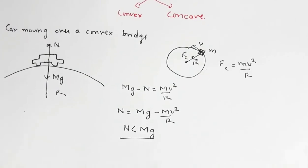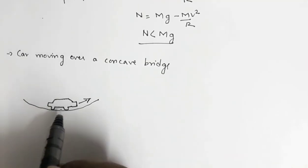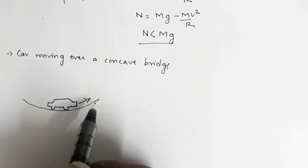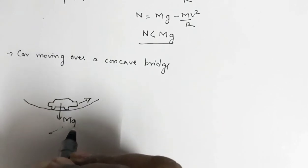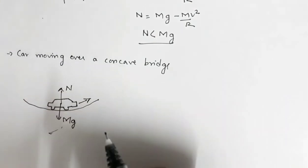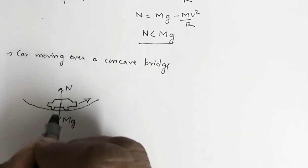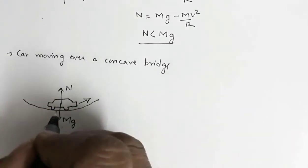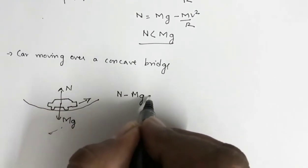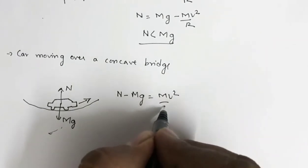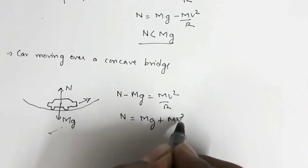Now let's see what happens when the car moves over a concave bridge. Here we have a car moving over a concave bridge. Its weight mg acts downward and the normal reaction N acts upward. In this case the curvature is upward, so the radial force acts upward, giving: N − mg = mv²/r, so N = mg + mv²/r.